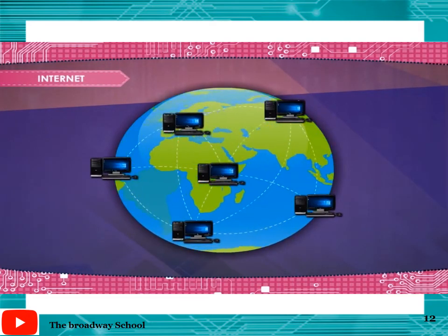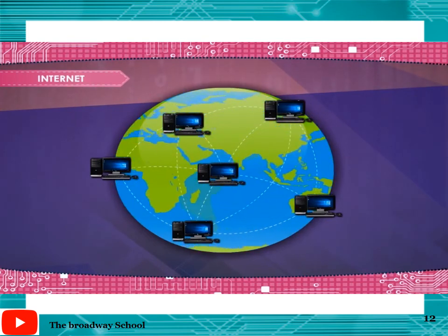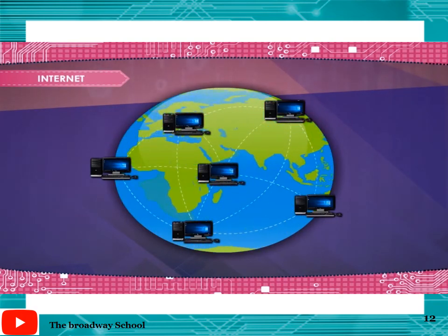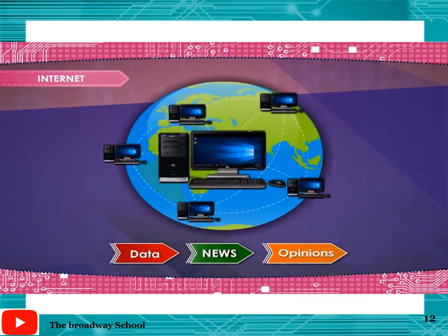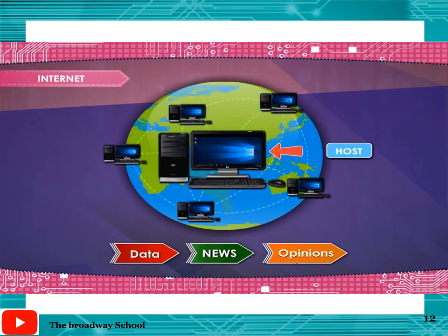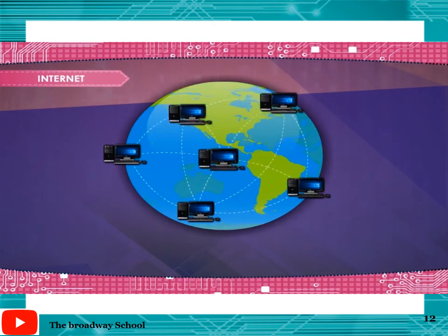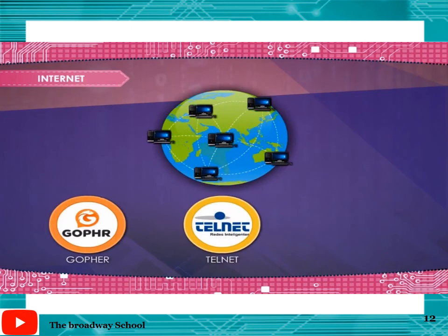Internet. The internet is a network of networks. It is a global network connecting millions of computers all over the world. Hundreds of countries are linked together via computers to exchange data, news, and opinions. Each internet computer is independent and called a host. It uses existing public telephone and communication networks including satellites to relay data between networks using routers. The fastest growing part of the internet is the World Wide Web. Other parts of the internet include services such as Gopher, Telnet, and FTP.